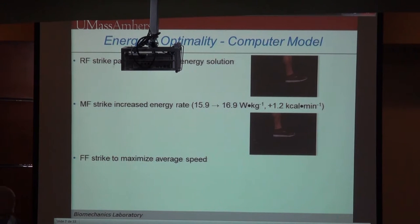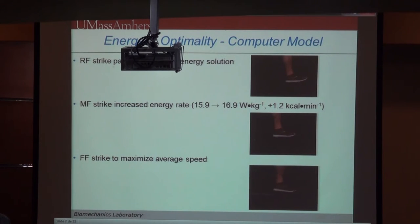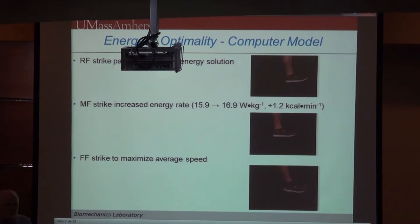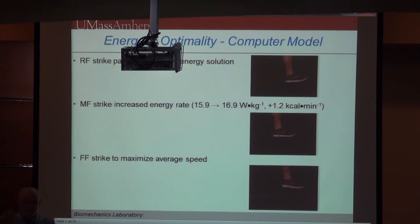The third cost solution was: run as fast as you can, don't worry about energy. What happened was the model went with the forefoot pattern. So we concluded that you use different footfall patterns for different reasons. If you want to run fast, you'll probably run faster with a forefoot pattern. If you want to run a long way, as in a marathon, you'll use a heel-toe pattern. And if you want to do both, it will cost you energetically, but you will run faster using the mid-foot pattern.